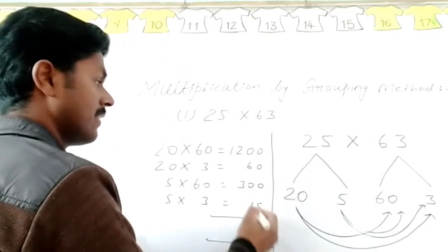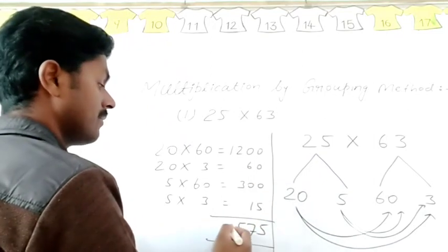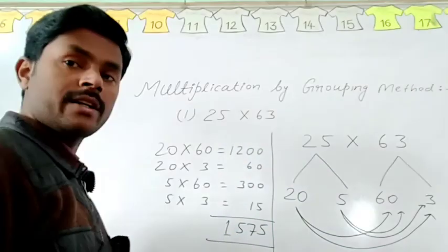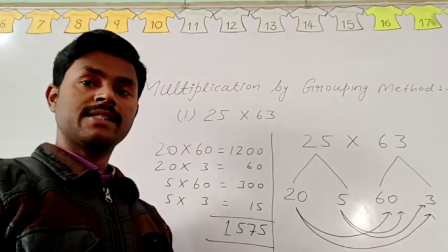5, 6 and 1 is 7, 2 and 3 is 5, and 1. So our answer is 1575.